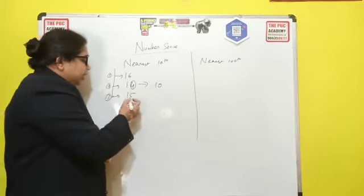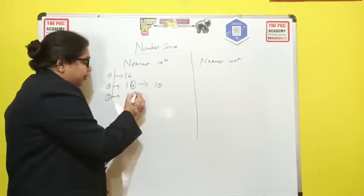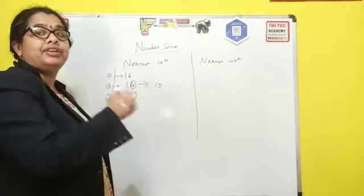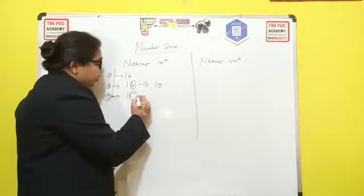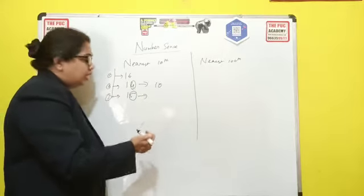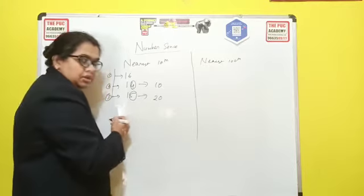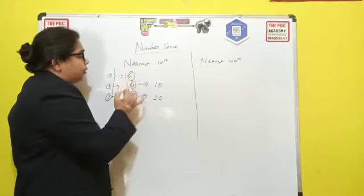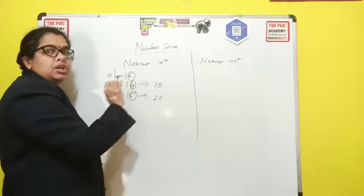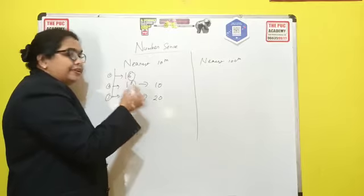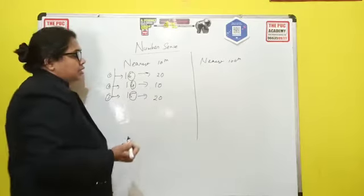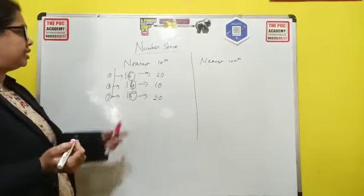If it is 15 or 16 — if on the unit place the number is 5 or bigger than 5 — in that case your nearest tenth will be the next tenth. That next tenth is 20. In the case of 16 also, on the unit place the number is 6, which is more than 5, so the next tenth is 20.